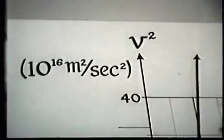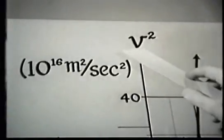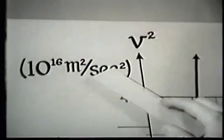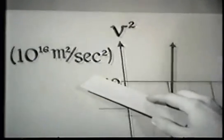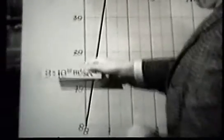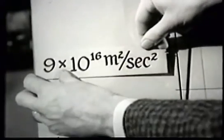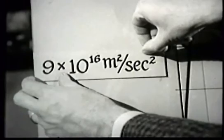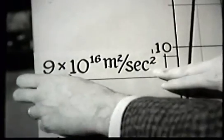The vertical axis represents the speed squared in units of 10 to the 16th meters squared per second squared. The square of the speed of light, for example, is here: 9 times 10 to the 16th meters squared per second squared.